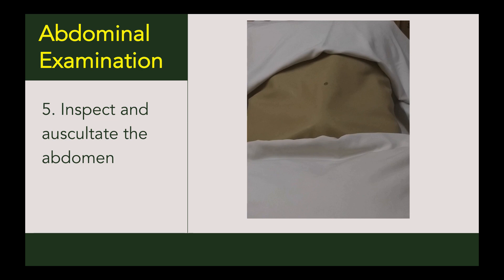Is there bulging of the flanks? Are there any obvious masses? Is there visible peristalsis? Observe also the movement of the abdominal wall with respiration. Note also the general appearance of the skin — does it have striae, any scars from a previous abdominal operation, or any discolorations?